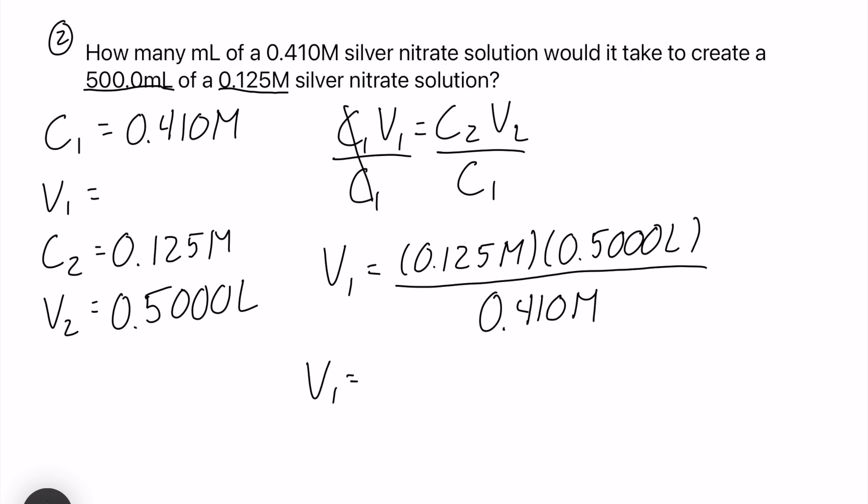So let's solve for V1. We are going to multiply 0.125 times 0.5 and finally divide it by 0.410, and what you should get for your V1 is 0.1524 liters. And just quickly here, the question asks in milliliters, so let's convert this.